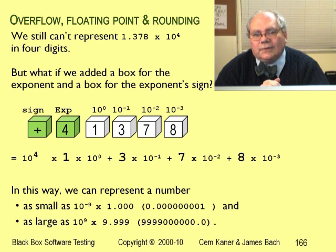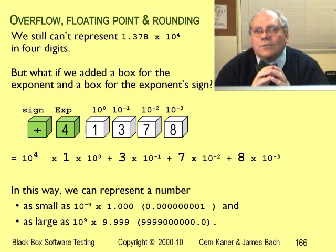And we actually need one more box. The problem is that the exponent can be negative as well as positive. Sometimes we multiply a mantissa by 10 to the fourth, but sometimes it's by 10 to the minus fourth. So for the last box, we store the exponent's sign.